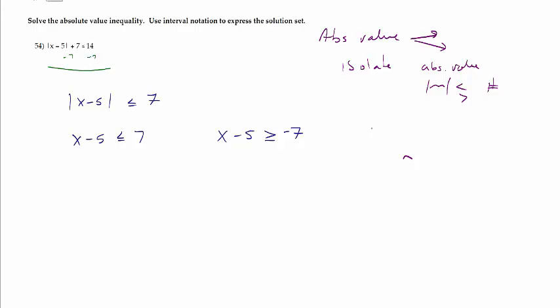Solving both of these — these are nice linear inequalities. Adding 5 to both sides, I will have x is less than or equal to 12. And then on the second inequality, adding 5 to both sides, x is greater than or equal to negative 2. The other thing I have to figure out is whether this is an and or an or. If you have the absolute value is less than some number, this is going to be the and. If you've got the absolute value greater than a number, that will be the or. This one is a less than, so I'm looking for the intersection of the two.